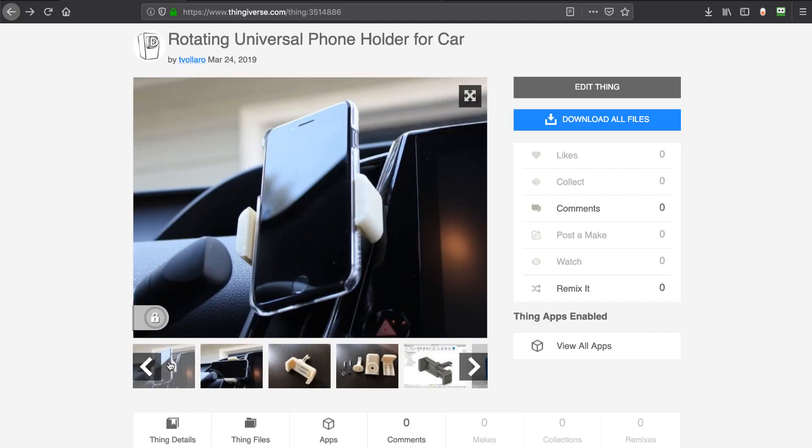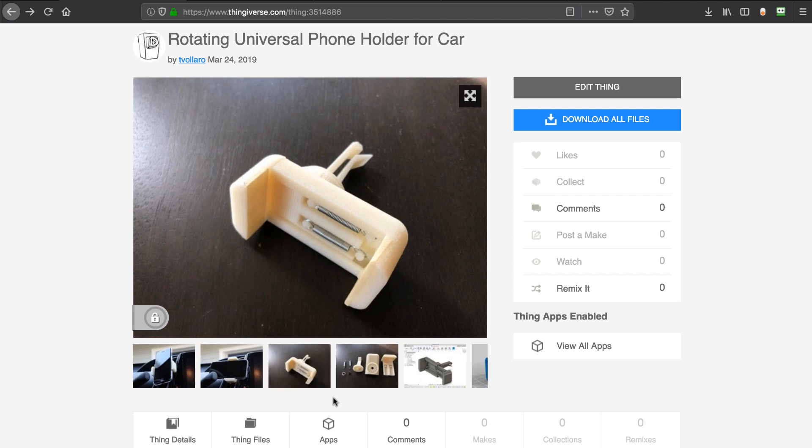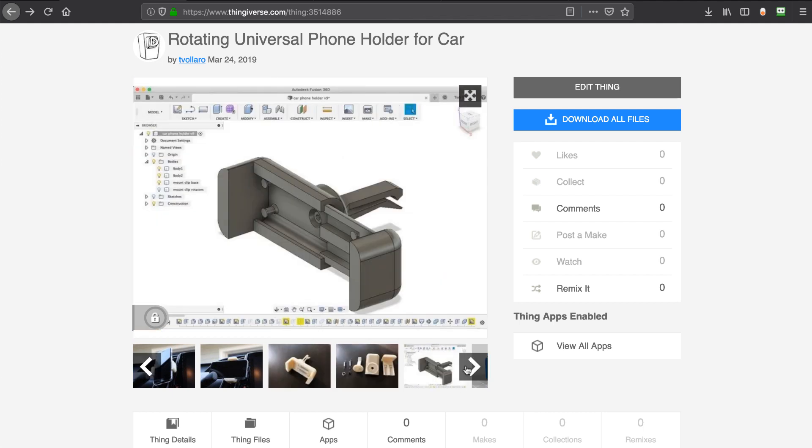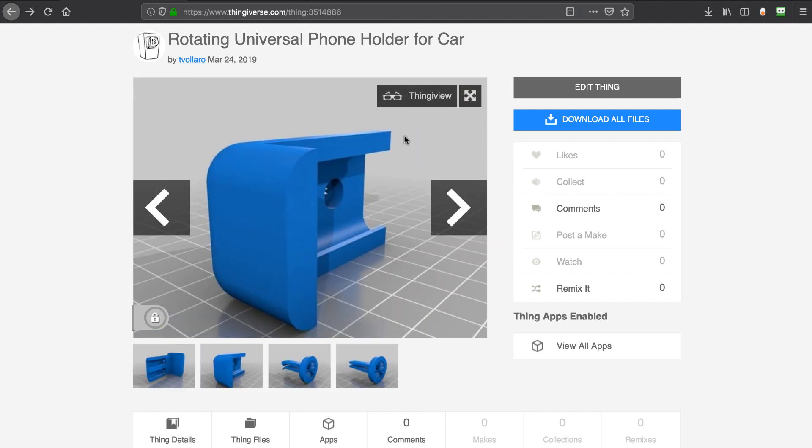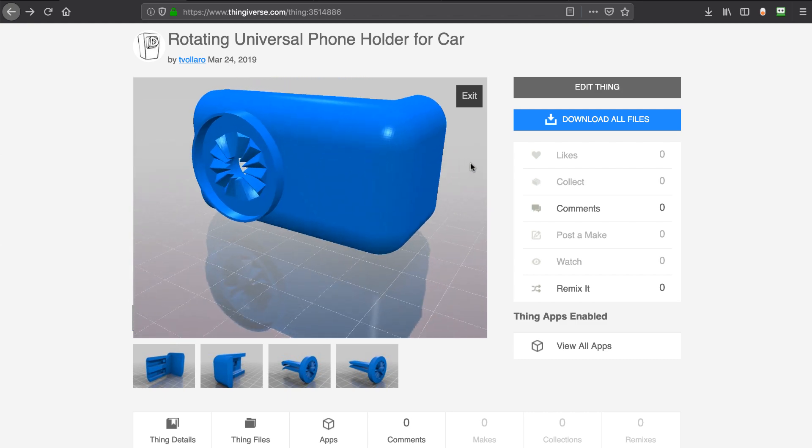I put all the measurements for the different items in the description. And I've also included a link to the original Fusion file if you want to try to hack this and make it better. So let me know how it goes.